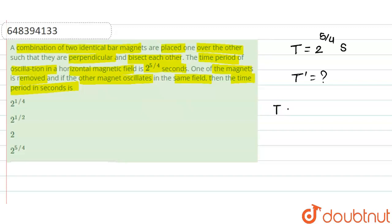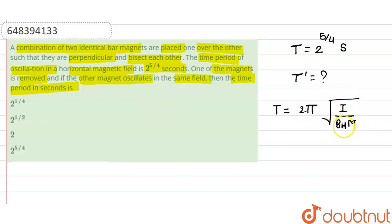Since the magnet is moving in a horizontal magnetic field, the time period formula is T = 2π√(I / (M·B)), where I is the moment of inertia, M is the magnetic moment, and B is the horizontal magnetic field.